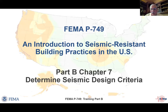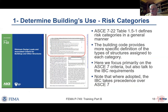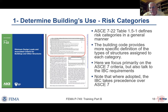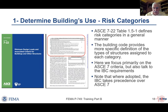We'll start by looking at how we determine the seismic design category. Table 1.5.1 of ASCE 7-22 specifies risk categories — a categorization of buildings and structures related to the amount of risk they pose to society if they fail. ASCE 7-22 has a simple table of risk categories, while the IBC has a much more detailed one. There are four risk categories, and if you are designing under the IBC or another building code, you should use the risk categories as defined in that code.